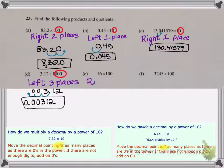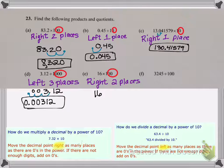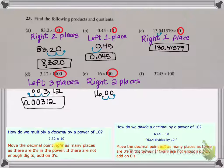Let's look at part E. I'm multiplying so it's to the right. A hundred has two zeros so I'm moving to the right two places. I take the number 16, which is a whole number. Notice how we don't see a decimal point in the number 16, but it's implied that it's at the end after the six. If I move that two places to the right I'm going to have to fill in two zeros. So my answer is 1600 — this is still a whole number since nothing comes after the decimal point.